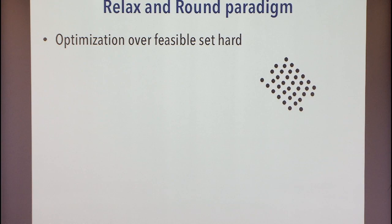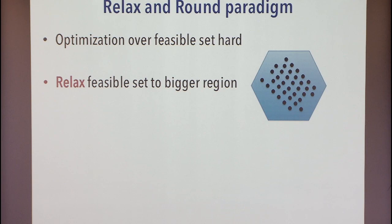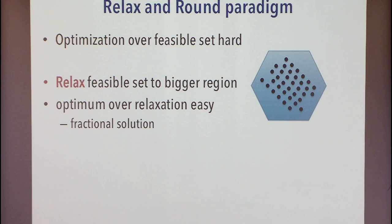There's a common paradigm for designing algorithms, especially approximation algorithms. It's called the relax-and-round paradigm. The way it works is: you want to solve some kind of optimization problem over some discrete set, which is hard to describe exactly and hard to optimize over. We find some convenient body that encloses these feasible points, and instead we try to solve over this larger body — this relaxation. Typically, you can solve this easily. An optimum solution on this larger space is called a fractional solution.